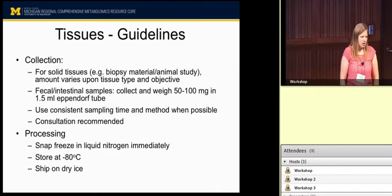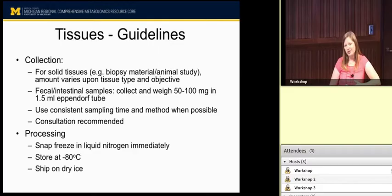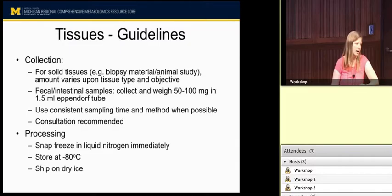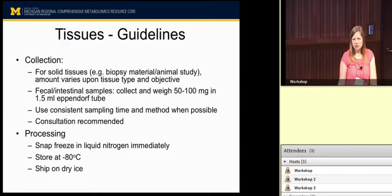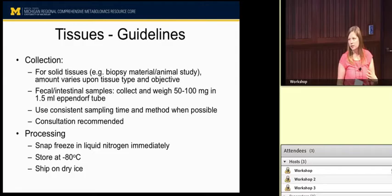For solid tissues, the amount required really does vary depending on what tissue type you have and what you want to look at, since metabolites are present in different quantities. We generally request a certain amount, and if that's a problem, talk to us and we'll work with you. Consistent sampling time and method is absolutely critical for tissues — more so than perhaps any other sample type. We recommend a consultation to help you get the most out of what you spend. Freeze tissue as soon as possible, since metabolism is continually happening and you really want to stop that as soon as you can.